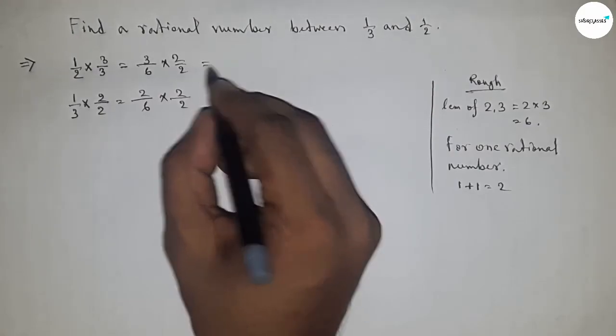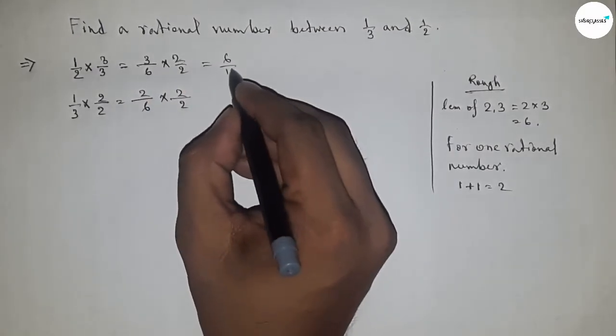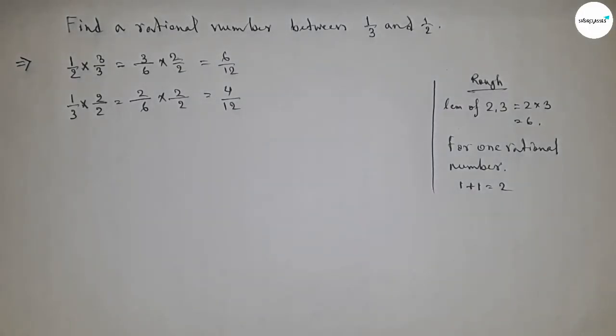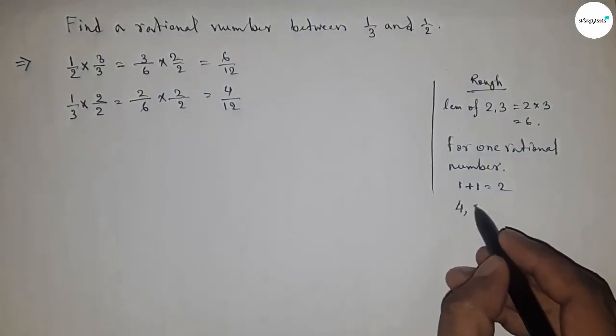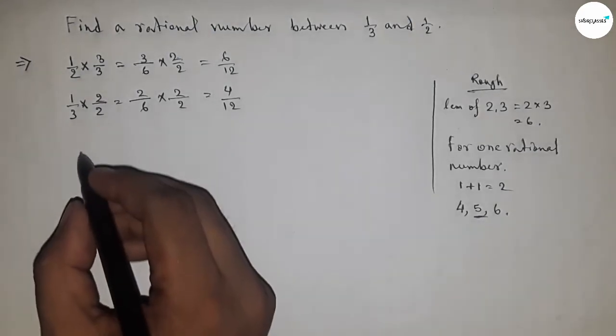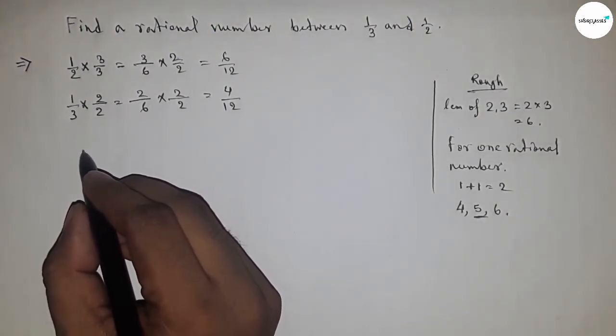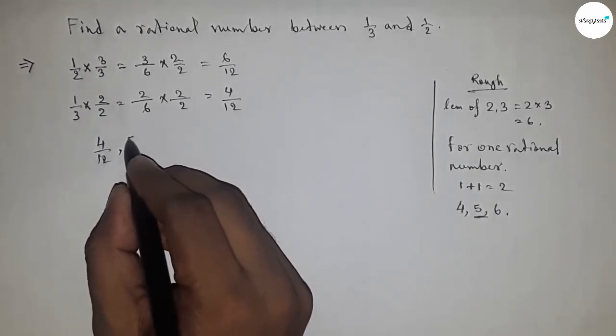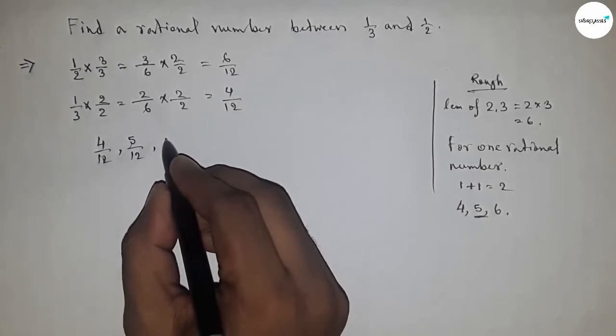This gives us 6/12 and 4/12. So between 4, 5, and 6, we got one - that's the number 5. So the three rational numbers are 4/12, 5/12, and 6/12.